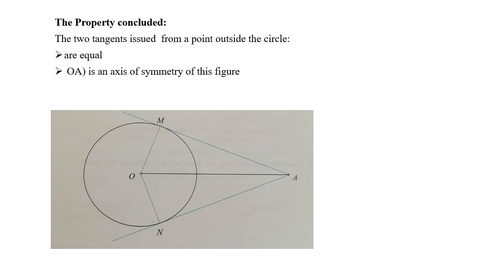So what I conclude from all this: if I have two tangents issued from a point outside the circle, they are equal. Now I can use that AM equals AN. Here I proved it using congruent triangles—I used a long method to prove it. But now you can use it as a property directly. And also you can use that OA is an axis of symmetry of this figure. This is also a property you can use directly without proof.